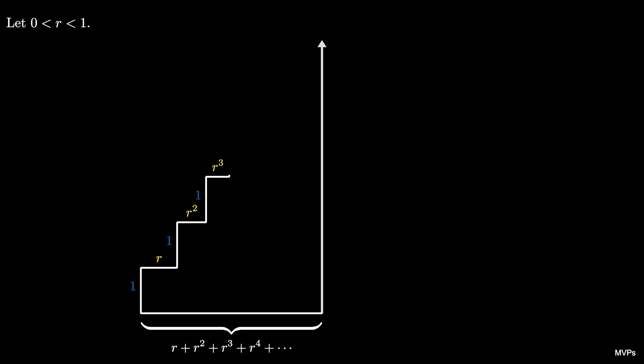This object has been called Gabriel's staircase. It has an infinite perimeter but encloses a finite area. Let's compute the enclosed area in two ways.